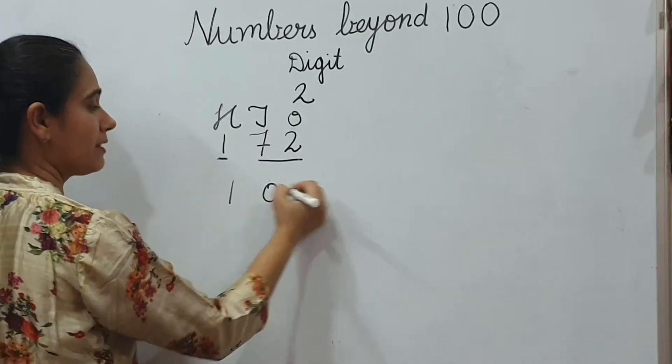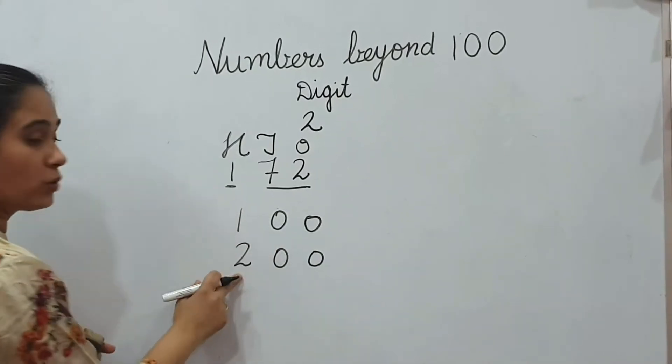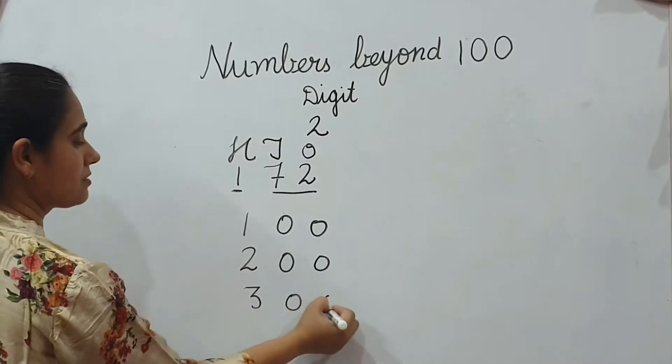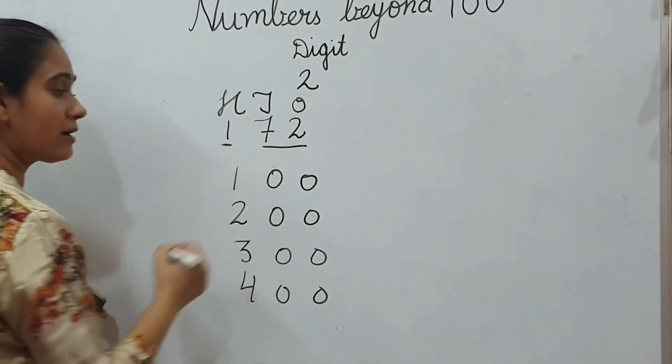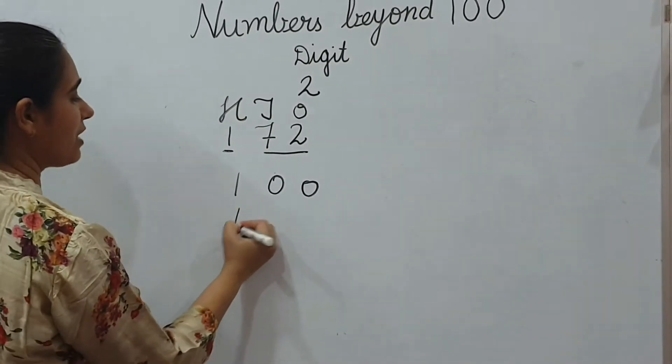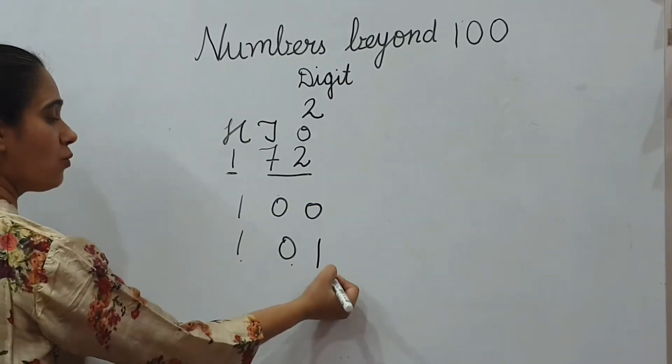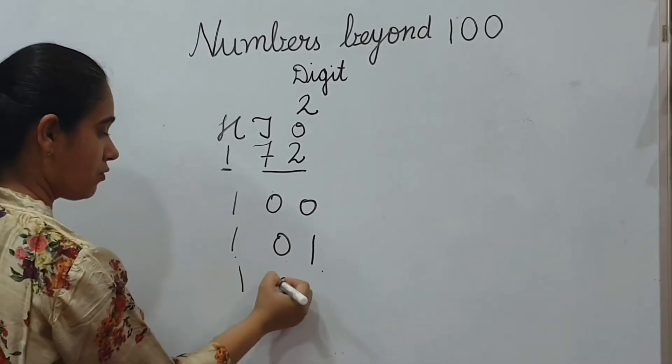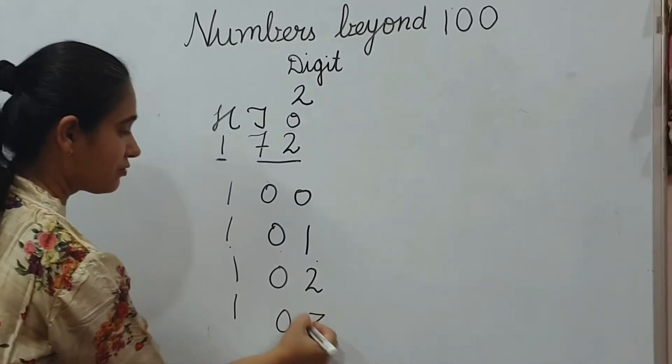Now, I have written 100 here. Now, if I will write 2 here, so what it is? 200. This is 300. This is 400. If I will write 1, 0, 1, it means 101, 102, 103.